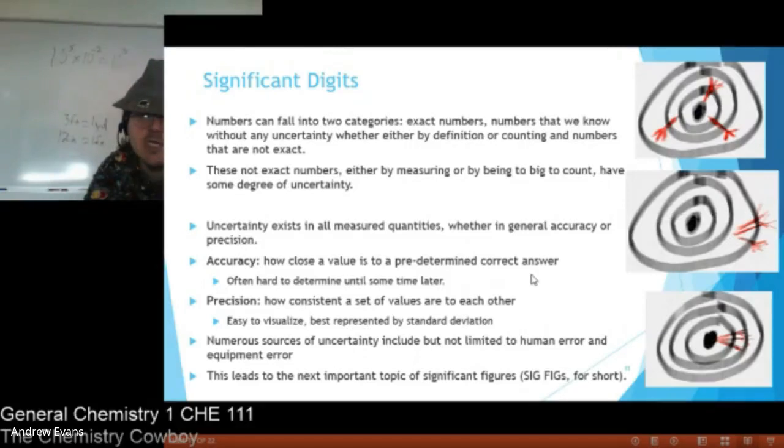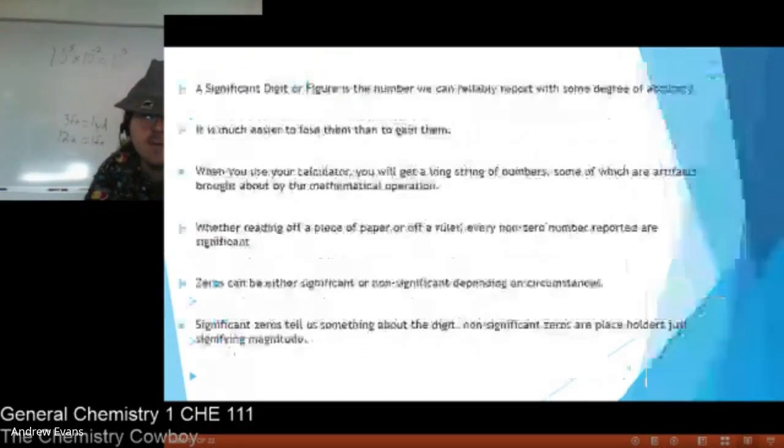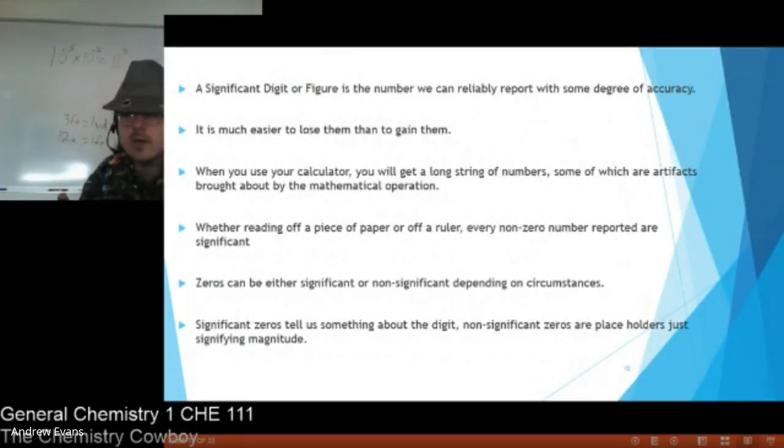So a significant digit, or significant figure, is one we can reliably report to some degree of accuracy. So we want to report all of our numbers as accurately as possible without any bullshit. We want people to know and trust our numbers. It's much easier to lose significant figures than it is to gain them.